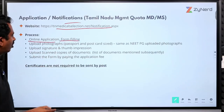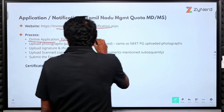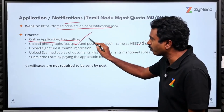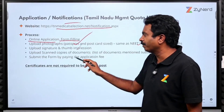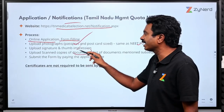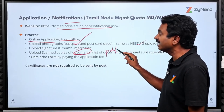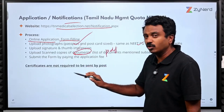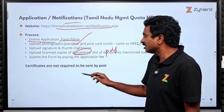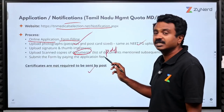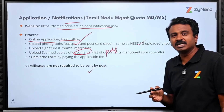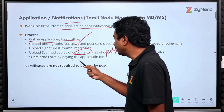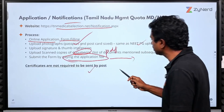You do an online application, fill your form, upload your photographs — passport size and postcard size — along with your signature and thumb impression. Scan copies of documents should be in PDF format. You do not need to send any documents to the Tamil Nadu Selection Committee or DME. Just submit the form by paying the application fee.